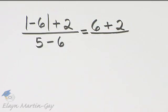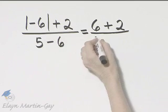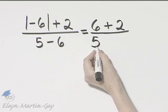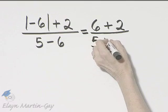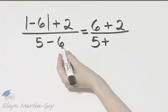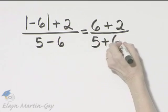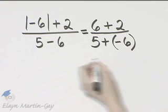Separately, we'll look at the denominator. This is subtraction. If you'd like, you can write it as the first number, 5, added to the opposite of the second number, 6, and the opposite of 6 is negative 6.